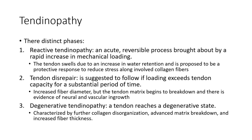If it progresses, you can have tendon disrepair, which follows if loading exceeds tendon capacity for a substantial period of time — increased fiber diameter likely due to water retention, with matrix breakdown and evidence of neural and vascular ingrowth. Neovascularization is not typically a normal finding, so its presence indicates damage occurring. Then there's degenerative tendinopathy, where collagen is completely disorganized, there's advanced matrix breakdown, and fiber thickness increases — seen in patients with chronic Achilles tendinopathy, with thicker, irregular-looking tendons due to haphazard secretion and disorganization of the ECM.